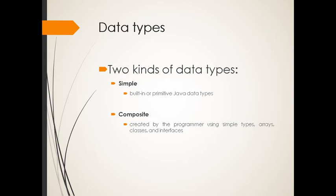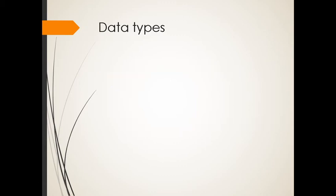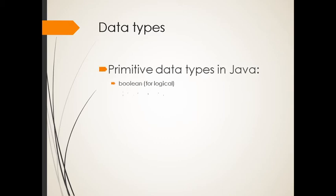Simple is actually built-in or a primitive Java data type that we can use. When we say composite, created by the programmer using simple types, arrays, classes, and interfaces. So these are the types of data types where you're the one who is creating it.